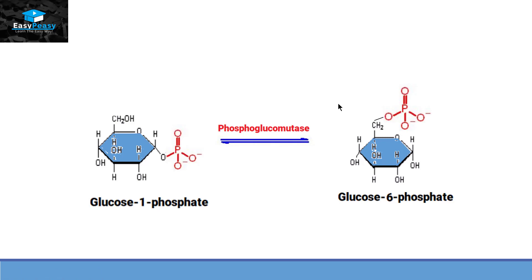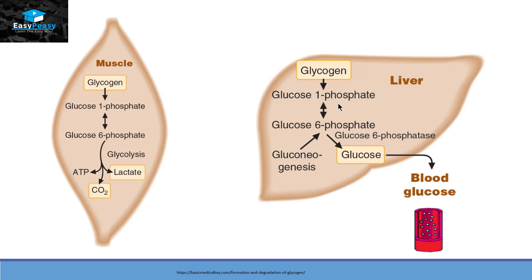Now at this point the targets of the cell diverge. Remember, muscle cells, brain cells, or heart cells use this process for instant energy, while the liver provides glucose to the blood to maintain blood glucose balance. In both cells, glycogen converts to glucose-1-phosphate and then to glucose-6-phosphate. But after that, in muscle cells, glucose-6-phosphate enters glycolysis and converts into ATP. In liver cells, glucose-6-phosphate is converted into free glucose by glucose-6-phosphatase, and then this glucose enters the blood.